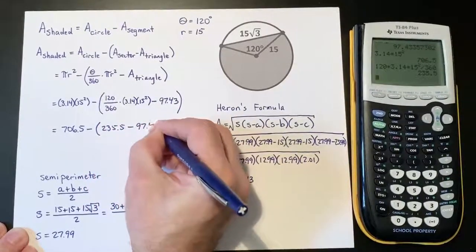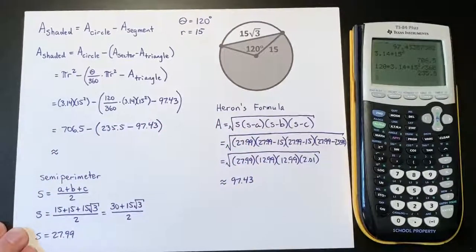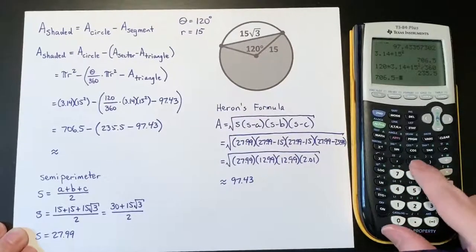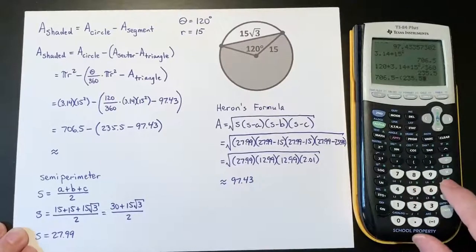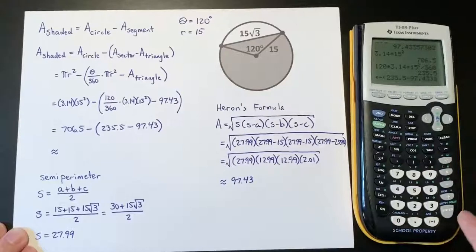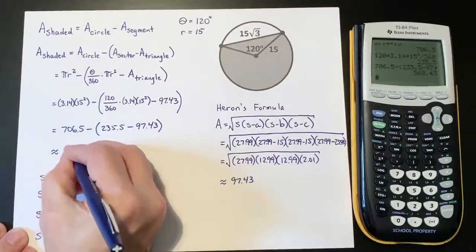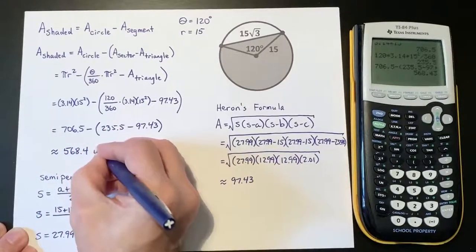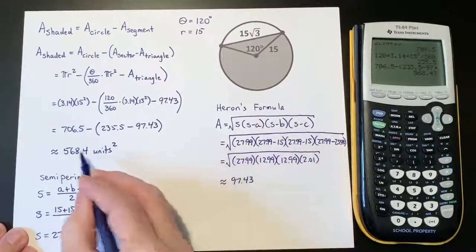Minus 97.43. And so we're going to get about—let's see what it gives us all together—706.5 minus (235.5 minus 97.43), and we get 568.4 units squared. And this is the area of this major segment of a circle.